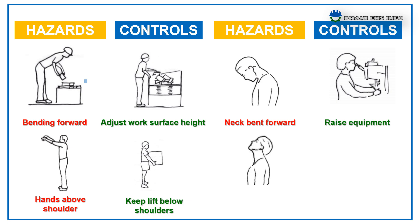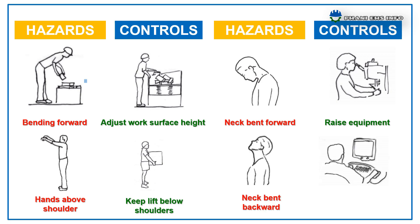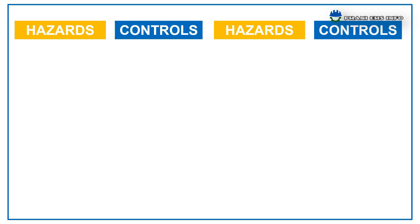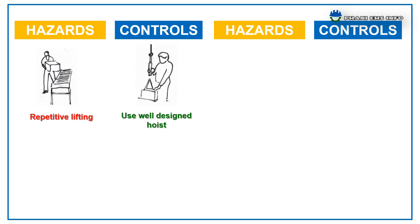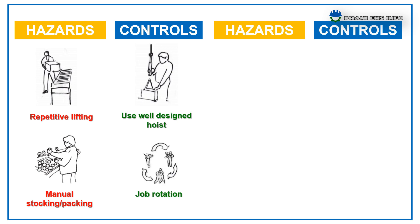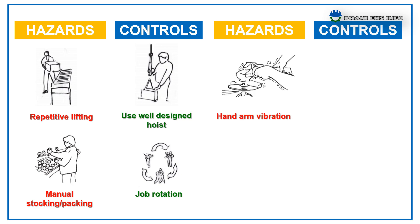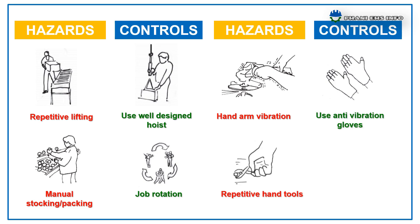Neck Bend Forward — raise equipment. Neck Bend Backward — place visual display in front of user. Repetitive Lifting — use a well-designed hoist. Manual stocking or packing — control by job rotation. Hand and arm vibration — use anti-vibration gloves. Repetitive hand tools — use well-designed power tools.